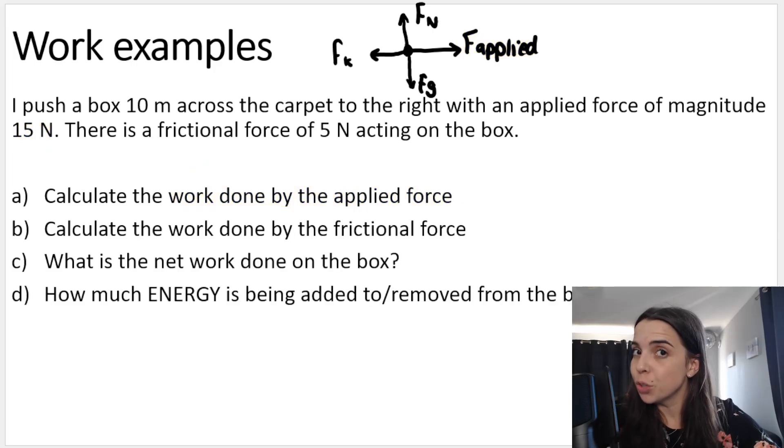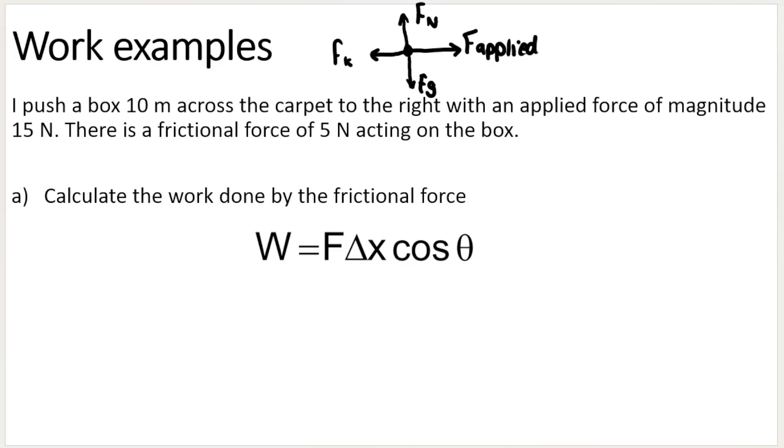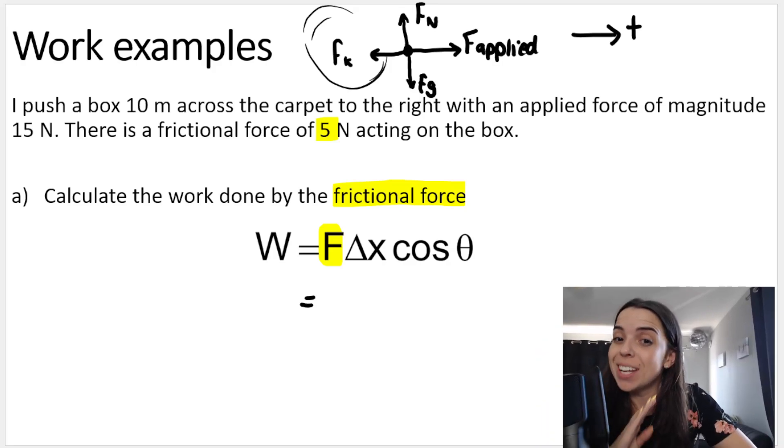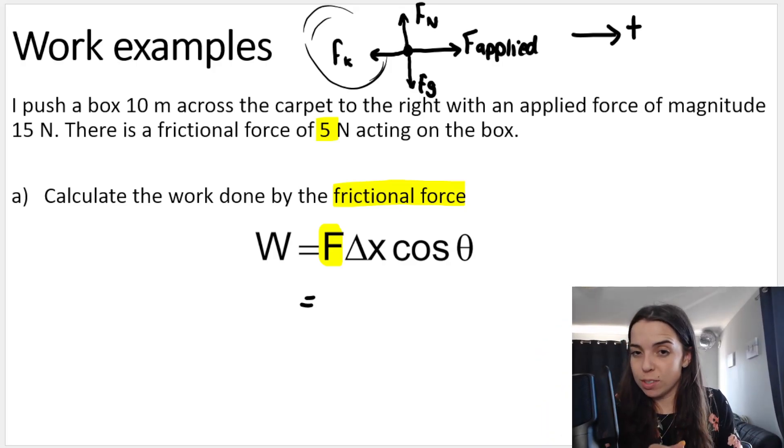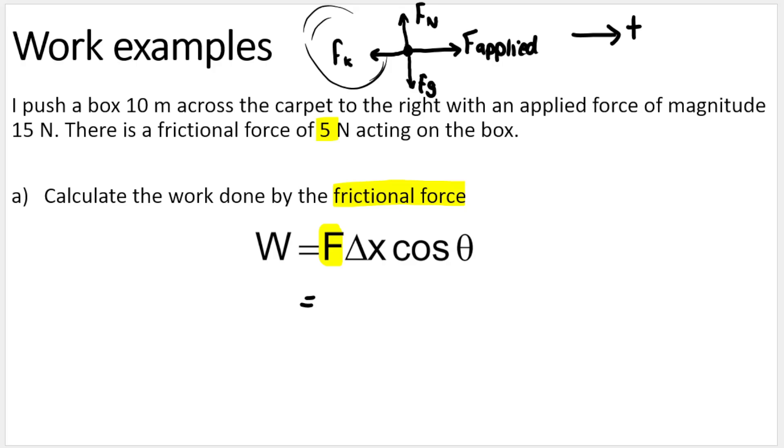Let's do the next question. Calculate the work done by the frictional force. Now, in the same way, we use the exact same formula to calculate work, but in this case, it's work done by the frictional force. So F is going to be 5. Now I know when you do Newton's laws, you choose a positive direction. So say you say to the right is positive, and because friction is going to the left in Newton's calculations, when you are calculating net force, you substitute friction in as negative.